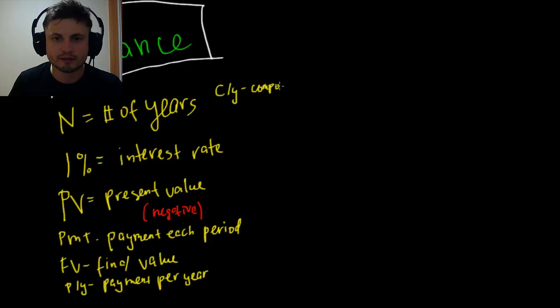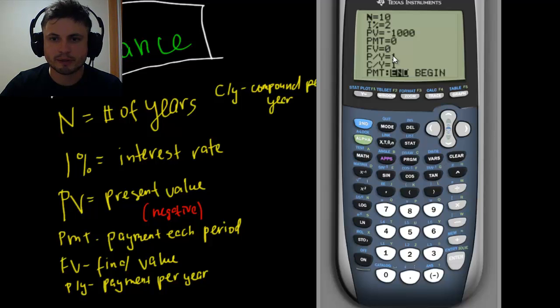This is when the interest is paid more than once per year. So for example, monthly interest compounds per year. In other words, if your interest is paid monthly, you'll enter this as 12. Anyway, let's try to calculate this.